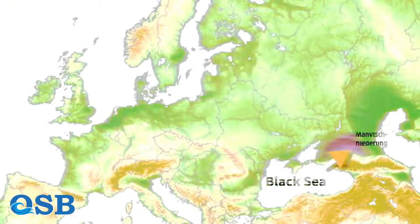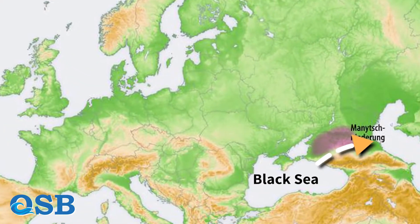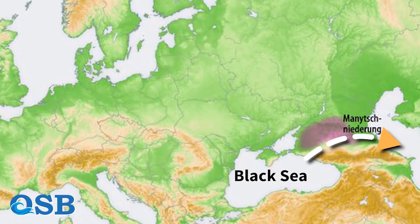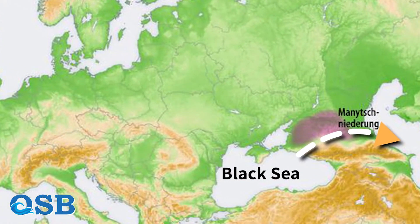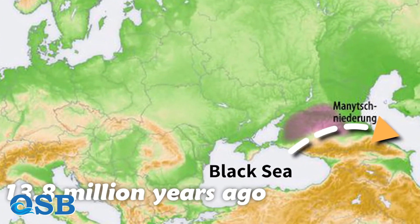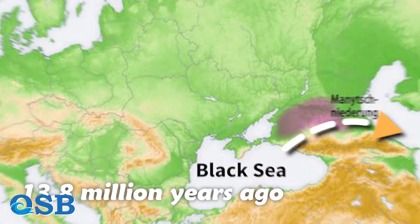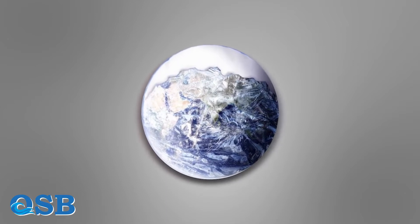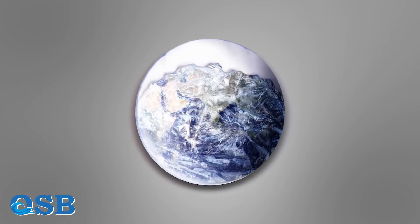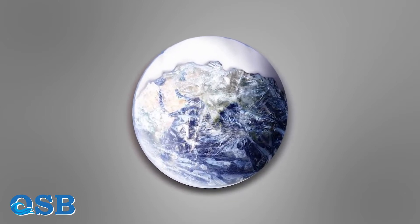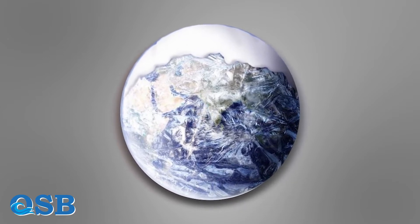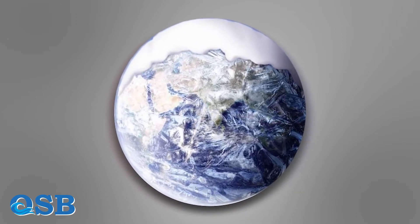The Manych Trench, also known as the Kuma-Manych Depression, served as a bridge between the Black Sea and the Caspian Sea until the beginning of the Late Miocene epoch, 13.8 million years ago. The Late Miocene was a global cooling and drying period from 11.63 to 5.333 million years ago, during which sea levels dropped, precipitation reduced, and rainforests withdrew.